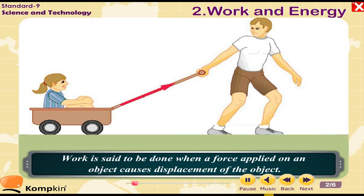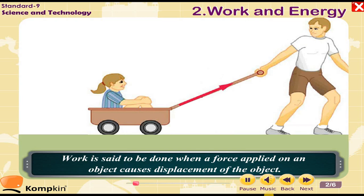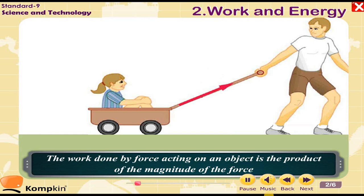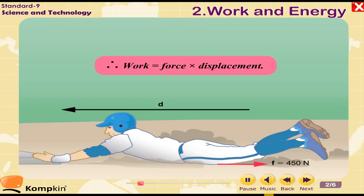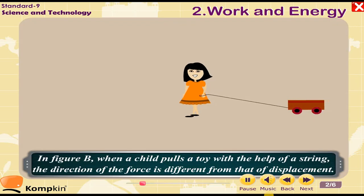Work is said to be done when a force applied on an object causes displacement of the object. The work done by a force acting on an object is the product of the magnitude of the force and the displacement of the object in the direction of the force. Therefore, work is equal to force multiplied by displacement.